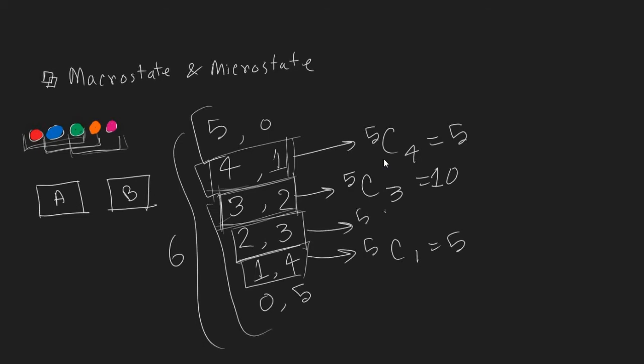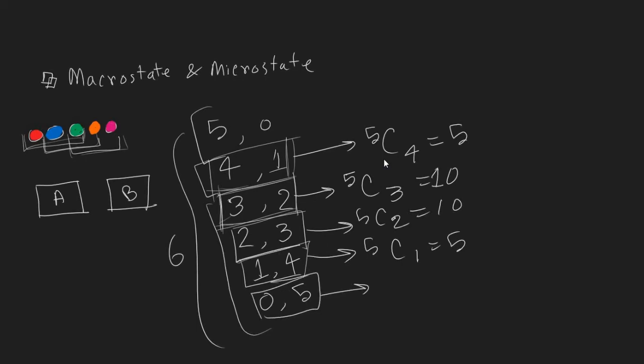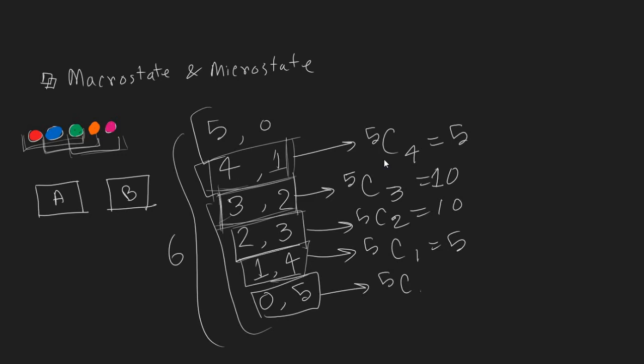And this one will also have 5 combinations. This one will also have 10 combinations. And this one, that is very obvious. So, we can rearrange 5 balls. Given all of the balls going to one box, there is only one possible outcome. So, 5C0 is 1, and 5C5 is also 1.